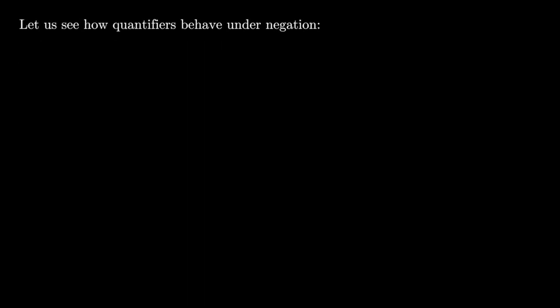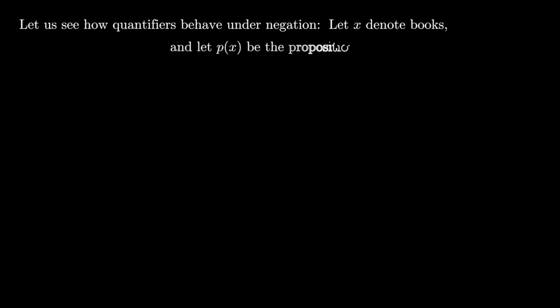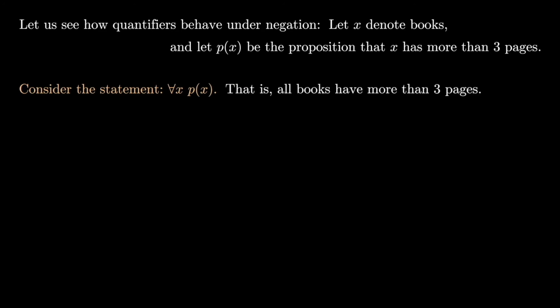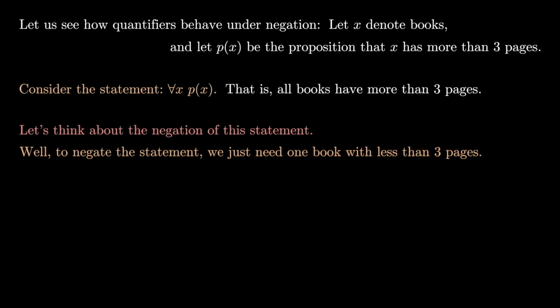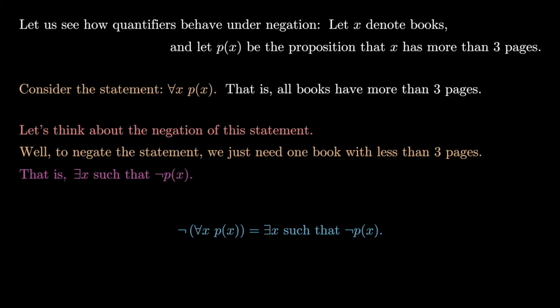Let x denote books and let P(x) be the proposition that x has more than three pages. The statement 'for all x, P(x)' means all books have more than three pages. To negate this, we just need to find a book with fewer than three pages — so the negation is 'there exists x such that ¬P(x),' meaning there is a book with fewer than three pages. The negation of a universal quantifier ('for all') is an existential quantifier ('there exists').